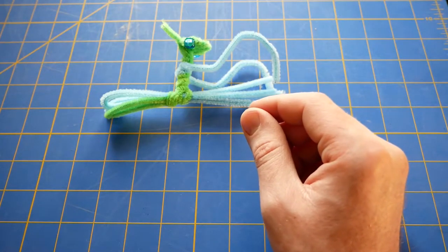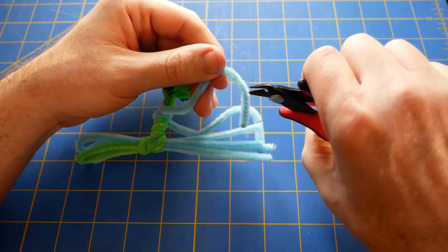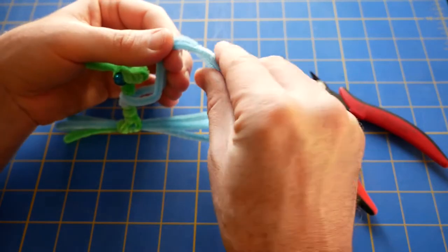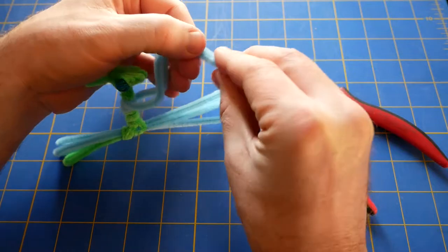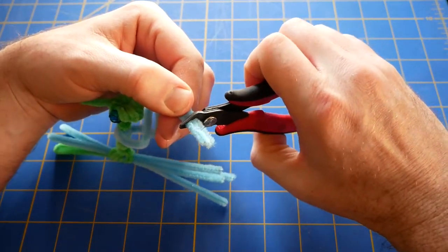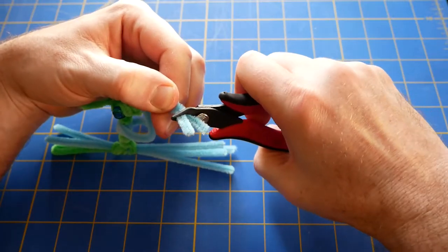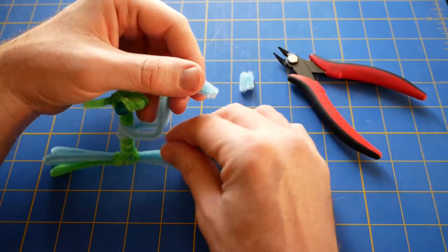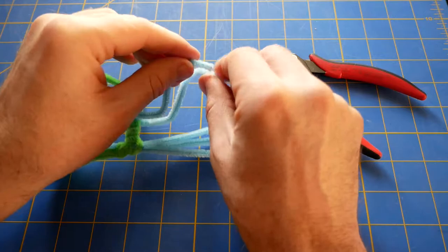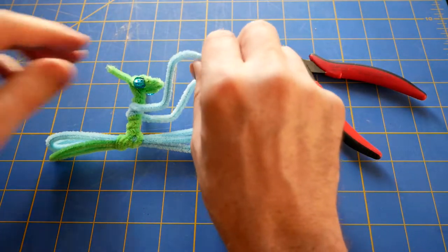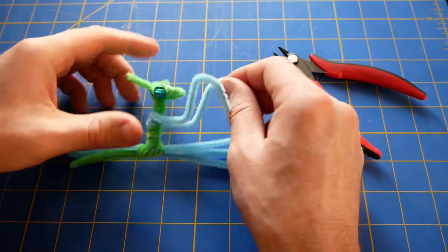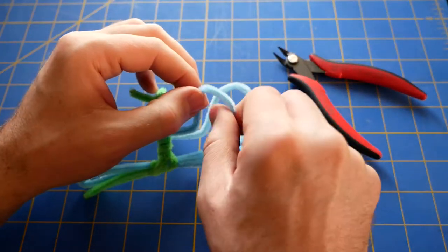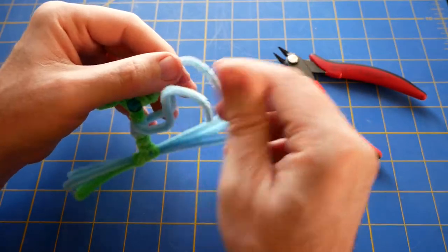And clip the excess. Measure out—make sure you cut the same amount on both sides. There we go. Like that, have the hooks going down.